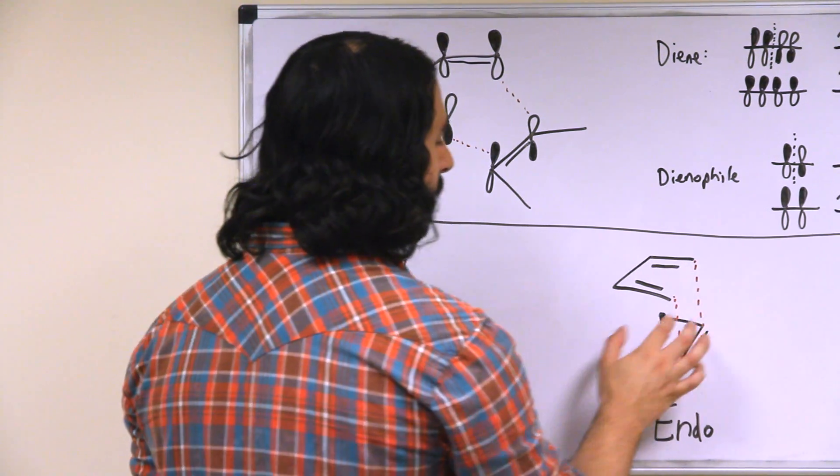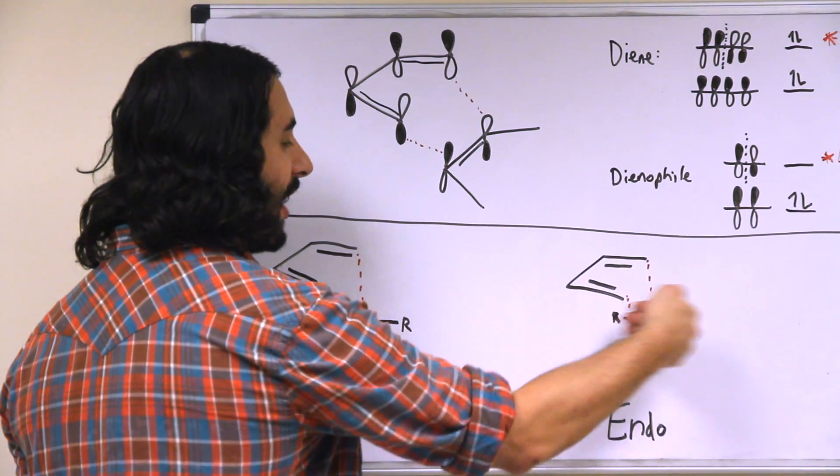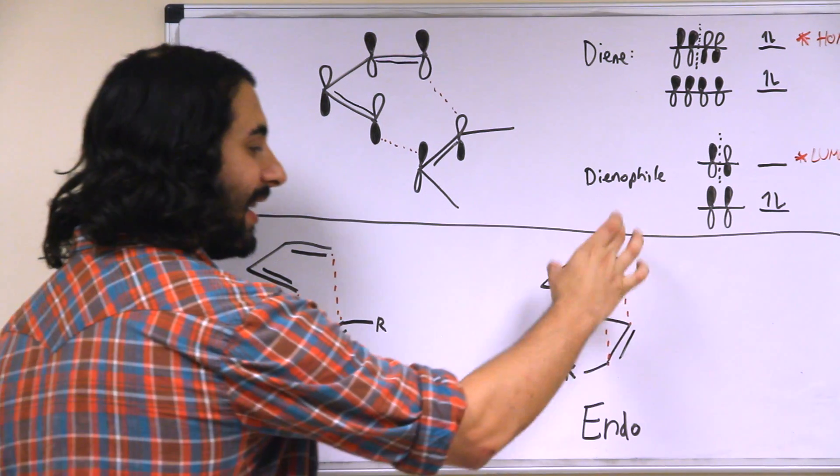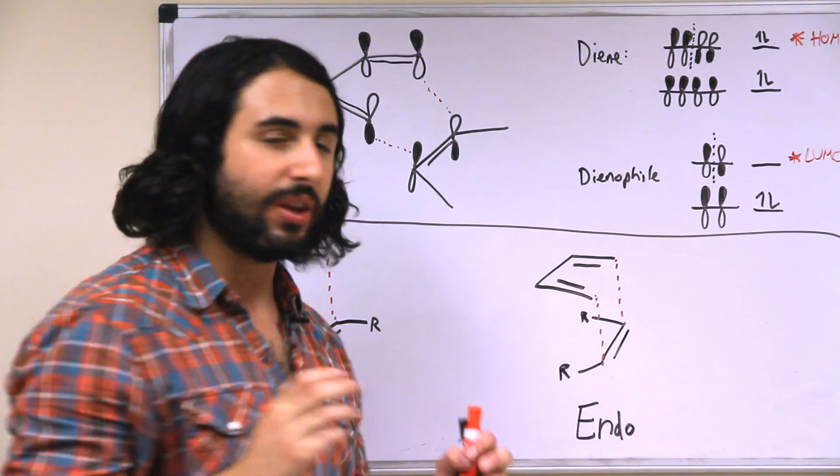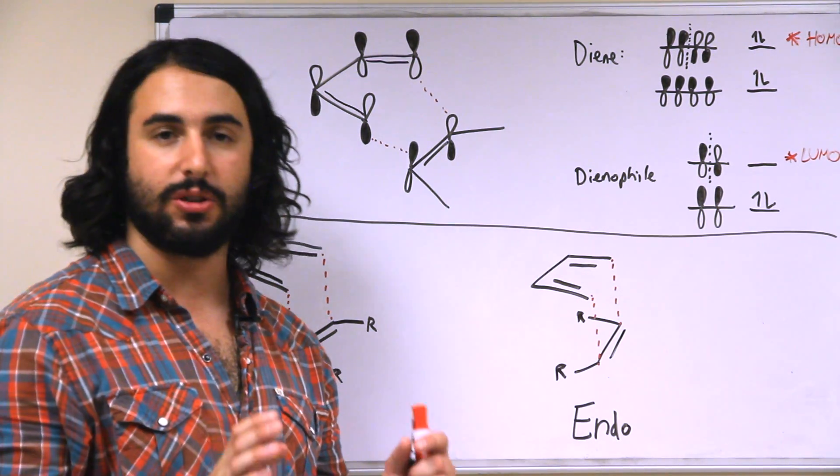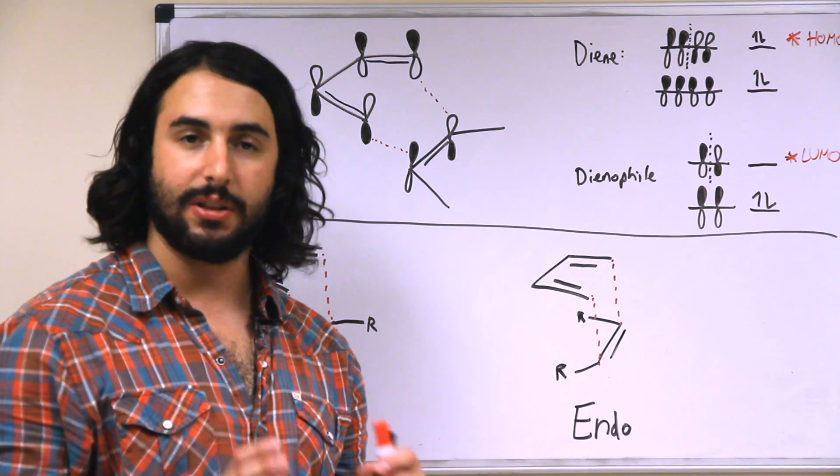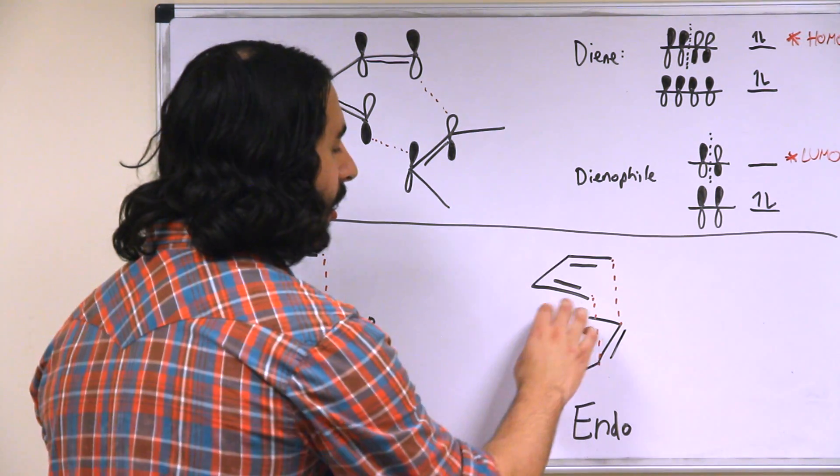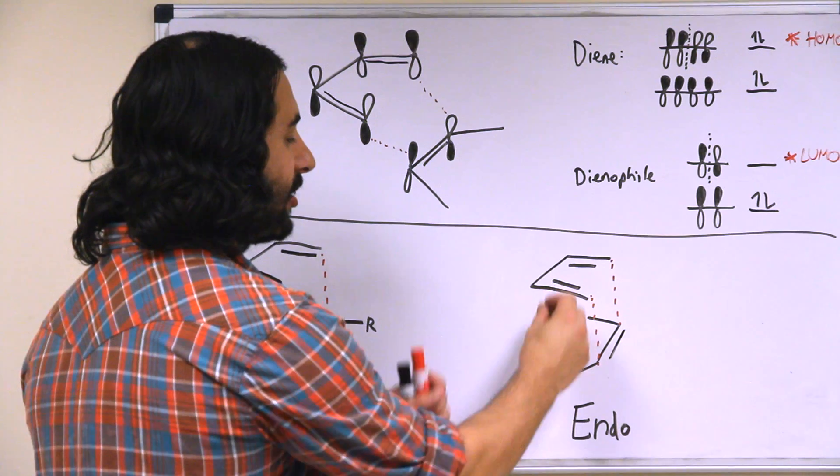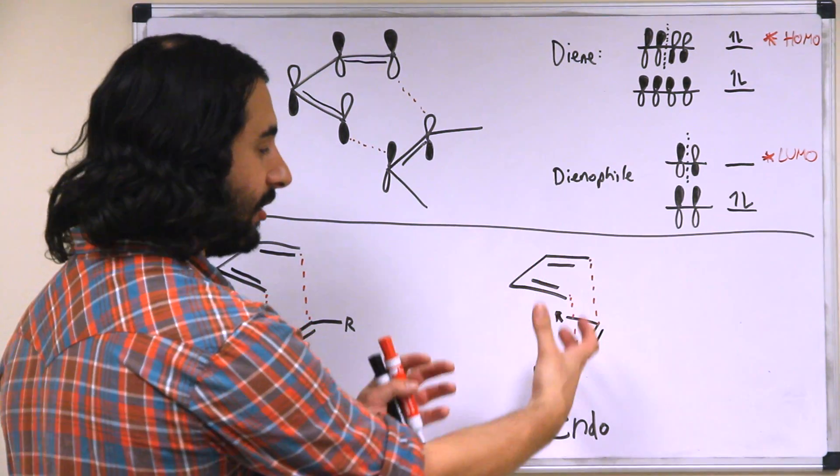Whereas with the endo, see how the R groups now are projecting directly under the plane of the diene as it approaches. So this can have something to do with the transition state of the Diels-Alder reaction if there are functional groups present such that some kind of an interaction can occur.